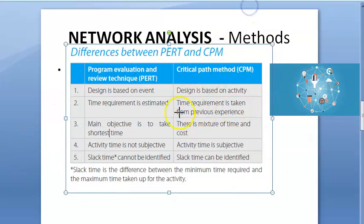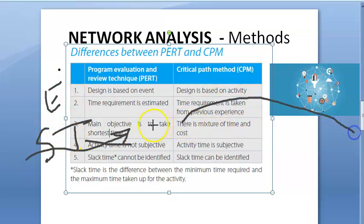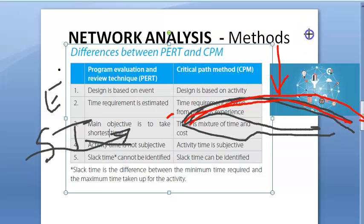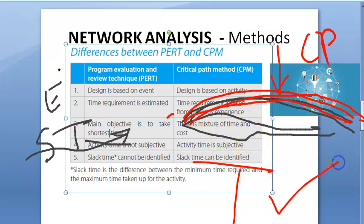In CPM, because you know the time from previous experience, you can determine the critical path — which is the longest time path. Your objective is to reach the destination in the shortest time. The path that takes the longest time is the critical path, and this will decide your total project time.